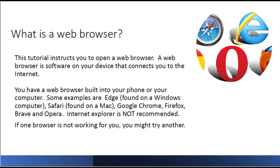This tutorial instructs you to open a web browser. A web browser is software on your device that connects you to the internet. You have a web browser built into your phone or computer. Some examples are Edge, generally found on a Windows computer; Safari, generally found on a Mac; Google Chrome; Firefox; Brave; and Opera. Internet Explorer is not recommended. If one browser is not working for you, you might try another.